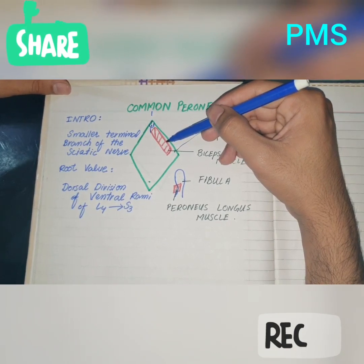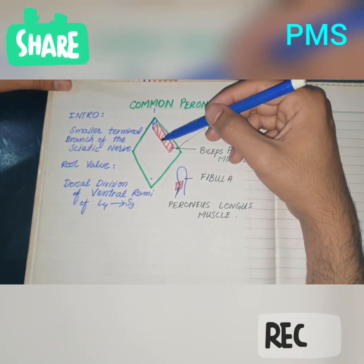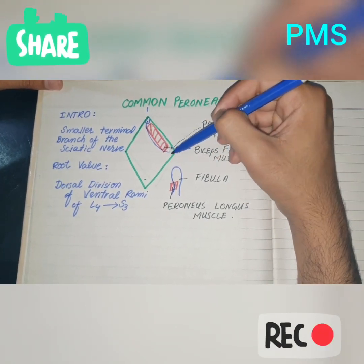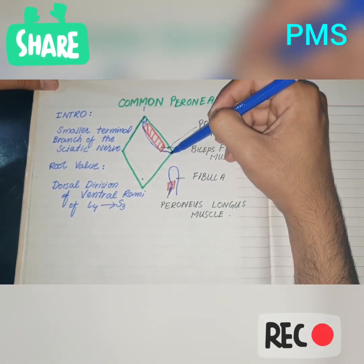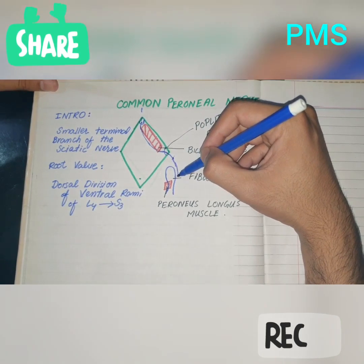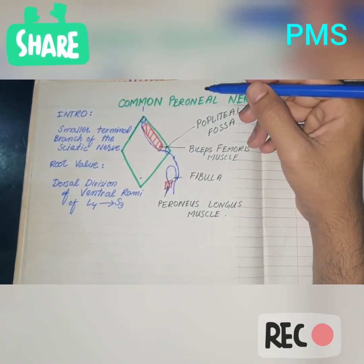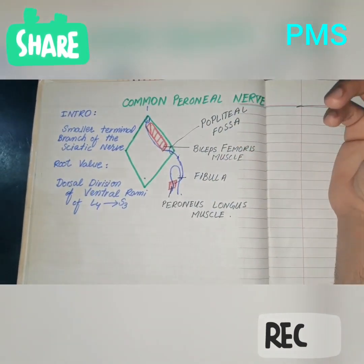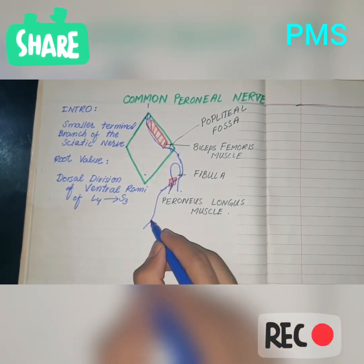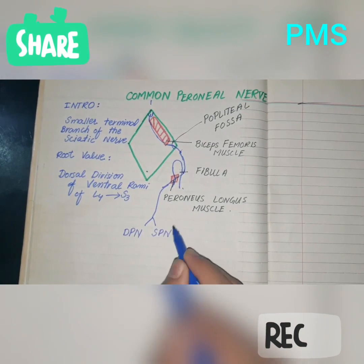This is the biceps femoris muscle, with its lateral border and medial border. The fibula is the lateral bone. The common peroneal nerve descends downwards and laterally along the medial border of the biceps femoris muscle, and leaves the popliteal fossa at its lateral angle. It then winds around the neck of the fibula laterally, enters the peroneus longus muscle, and within the substance of the peroneus longus muscle, terminates into two terminal branches: the deep peroneal nerve and the superficial peroneal nerve.